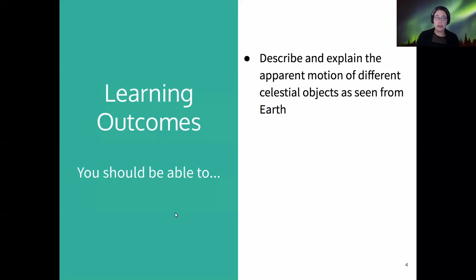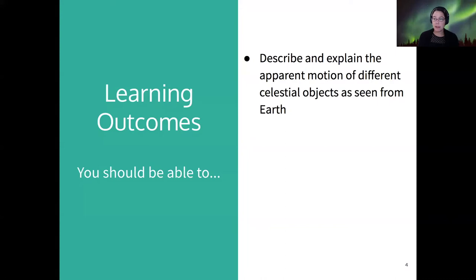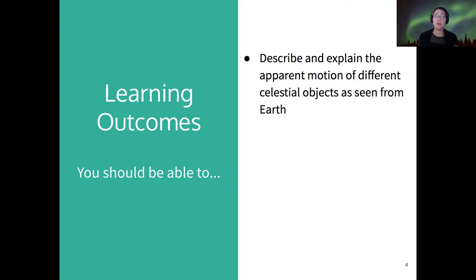Our learning outcomes for today are essentially to be able to describe and explain the apparent motions of different celestial objects as seen from Earth. So what I mean by that is how do the stars move in our sky, how do the planets move, and how does the sun and moon move. You should be able to describe not only how those objects appear to move from our vantage point, but also why they appear to move that way.